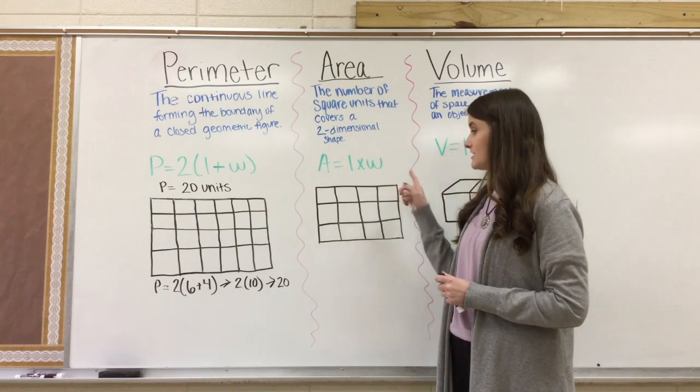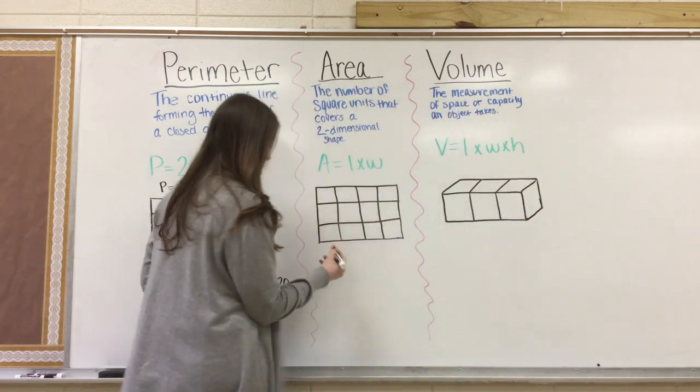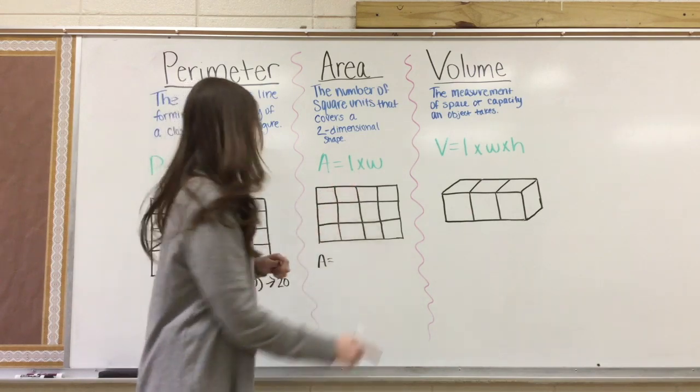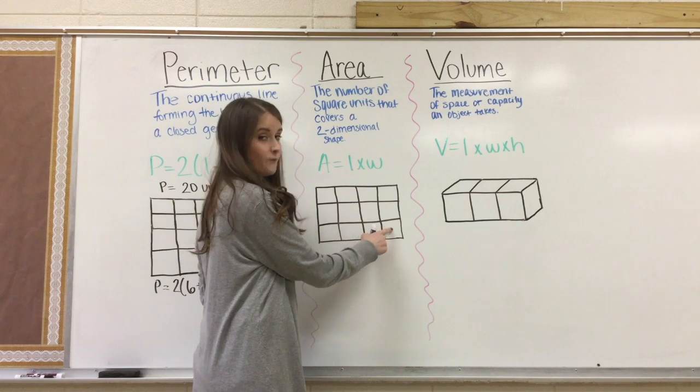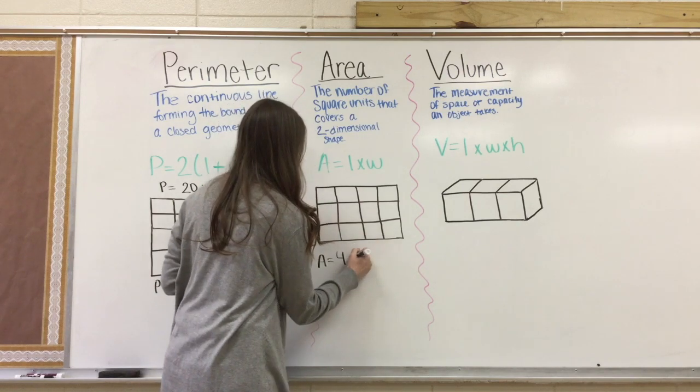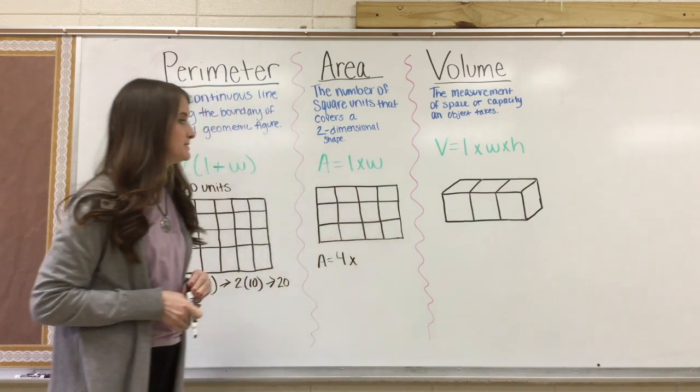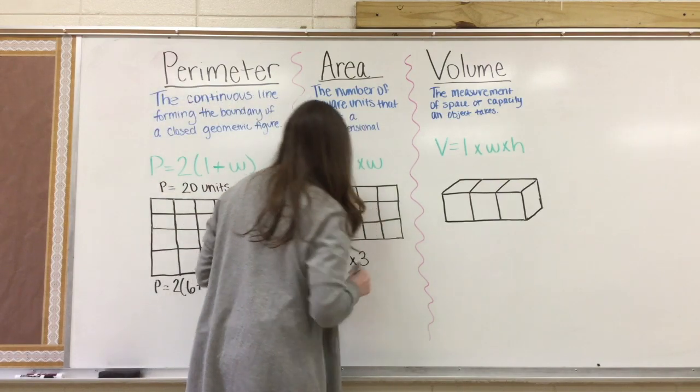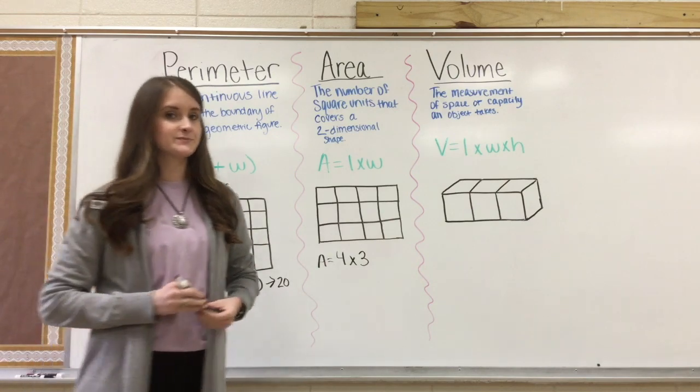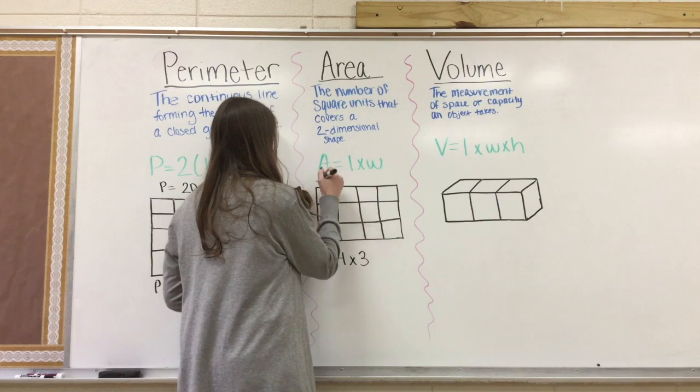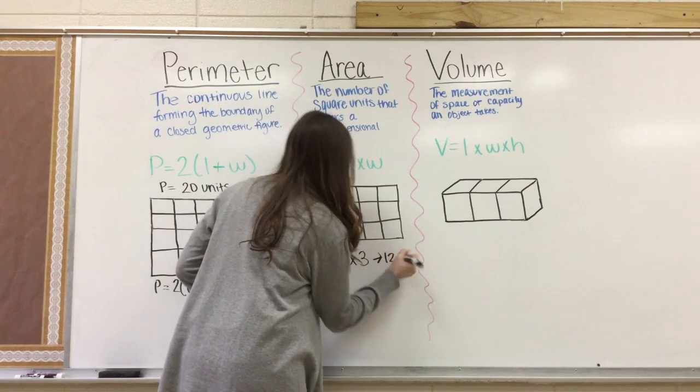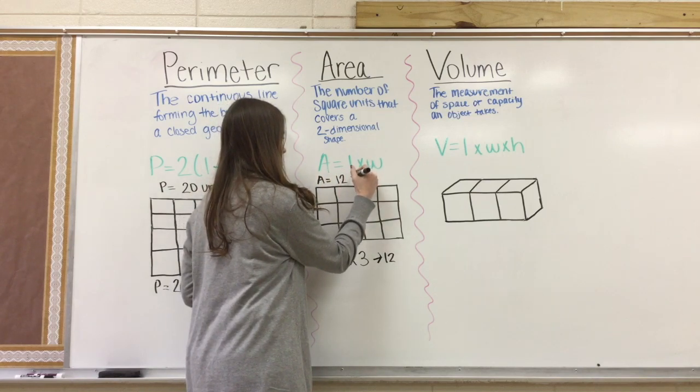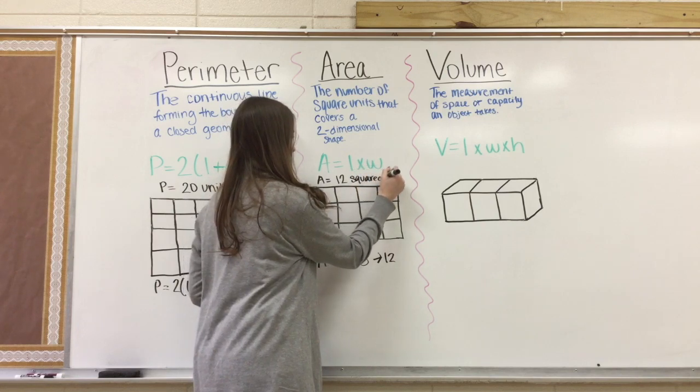Using that formula, we're going to calculate the area of this shape. So we're going to write A equals, first we need to find out the length, which is 1, 2, 3, 4. So we're going to write down 4 for L, times, and then we need to write down the width: 1, 2, 3. Can someone tell me what 4 times 3 is? That's right, it's 12.